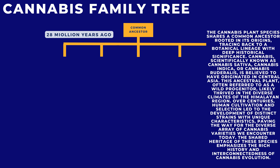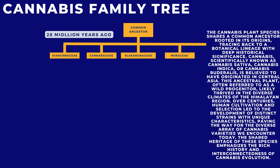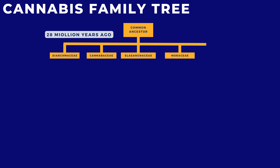This ancestral plant, often referred to as a wild progenitor, likely thrived in the diverse climates of the Himalayan region. Over centuries, human cultivation and selection led to the development of distinct strains with unique characteristics, paving the way for the diverse array of cannabis varieties we encounter today. The shared heritage of these species emphasizes the rich history and interconnectedness of cannabis evolution.